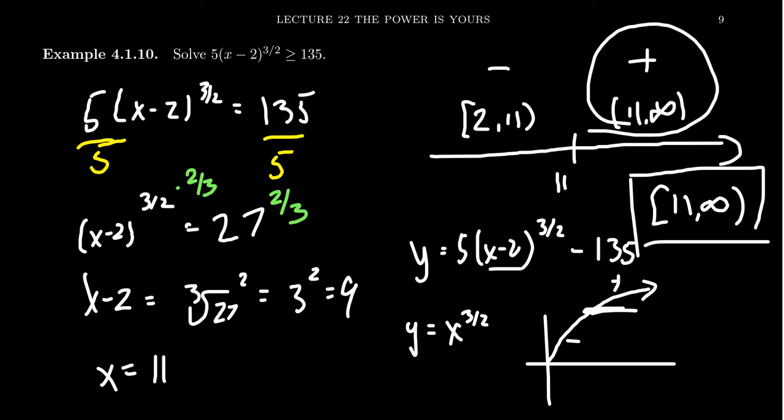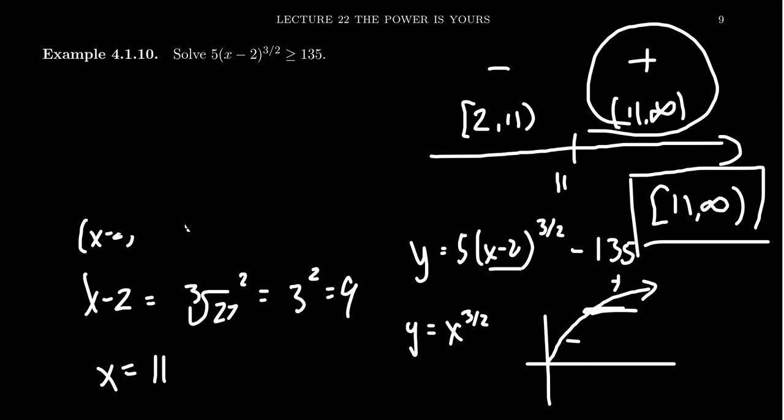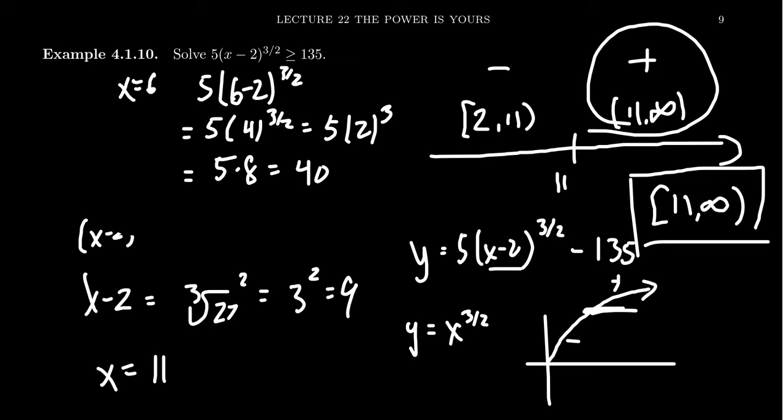I would plug in something for which I expect to get a perfect square. Like, for example, if I take the number 6, take x equals 6, for example, you would end up with 5 times 6 minus 2 to the 3 halves. That gives us 5 times 4 to the 3 halves. The square root of 4, of course, is 2. So we get 5 times 2 cubed. That's going to give us 5 times 2 cubed is 8. And so 5 times 8 is 40. 40 is not bigger than 135. So we see that having a number less than 11 didn't work.